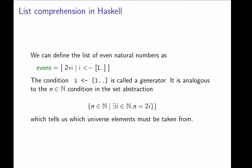The condition here is called a generator. It's analogous to the condition here in the set abstraction. This is a condition that tells us which universe to take the n's from. And here we say that the i is taken from here, from this infinite range. So this is called a generator, what we've got here.